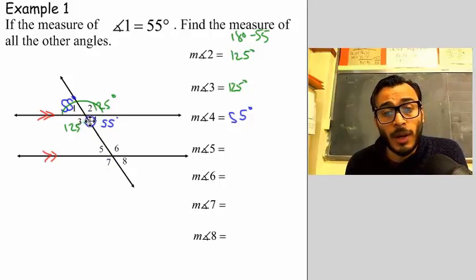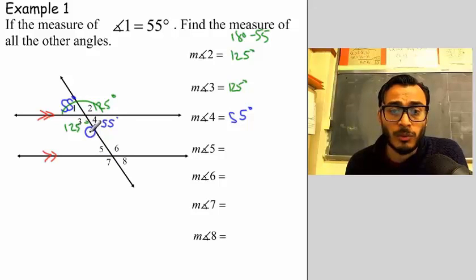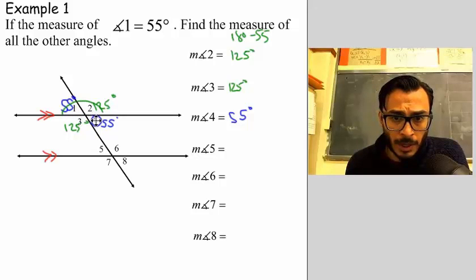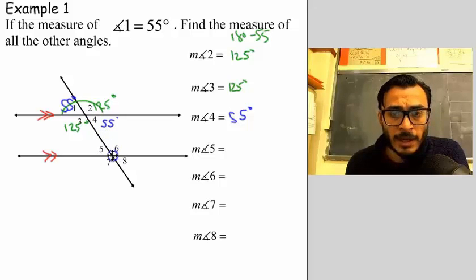And then all the acute angles are equal to each other. Which ones are the acute? That's angle one, angle four, angle five, and angle eight.